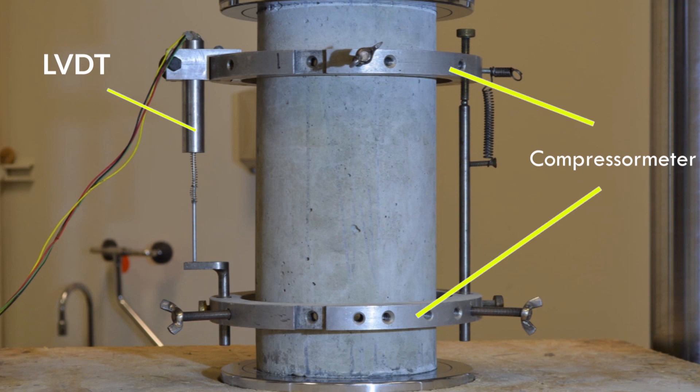LVDT stands for Linear Variable Differential Transformer. The LVDT is mounted with compressometer on the specimen.